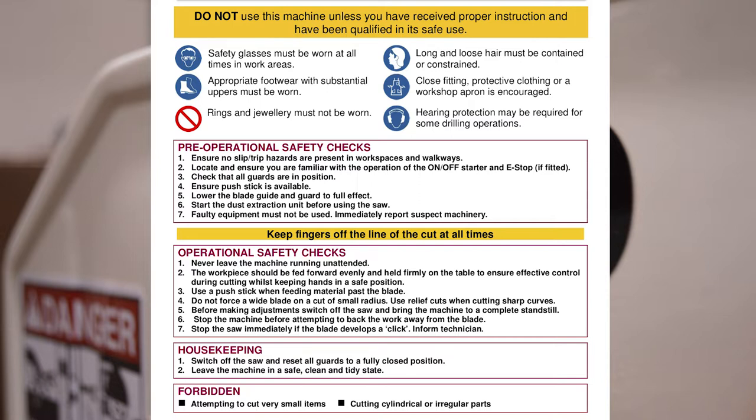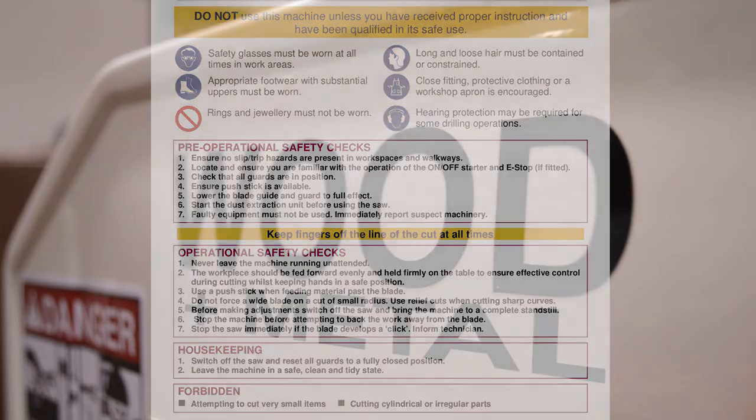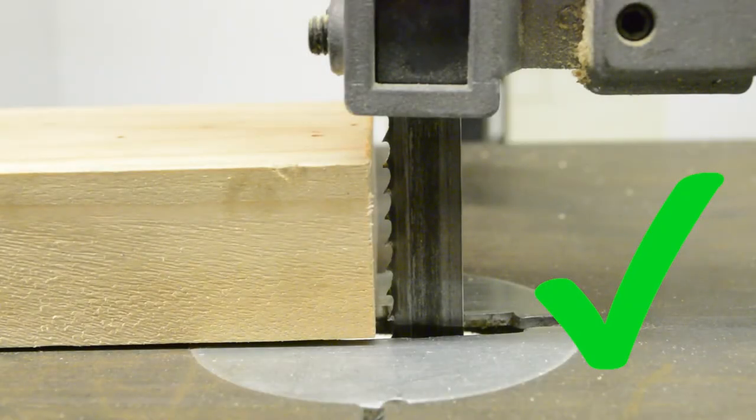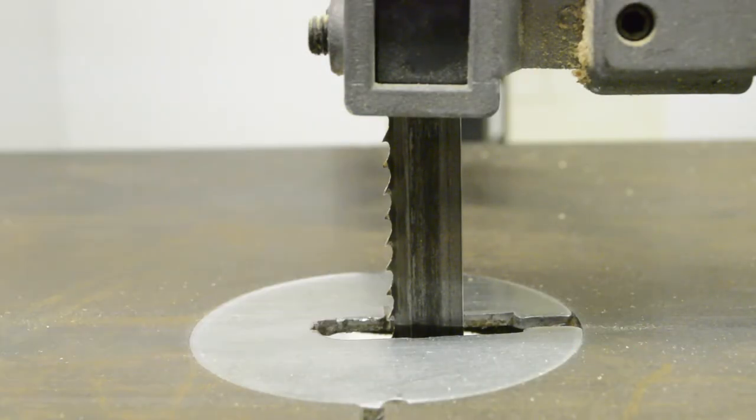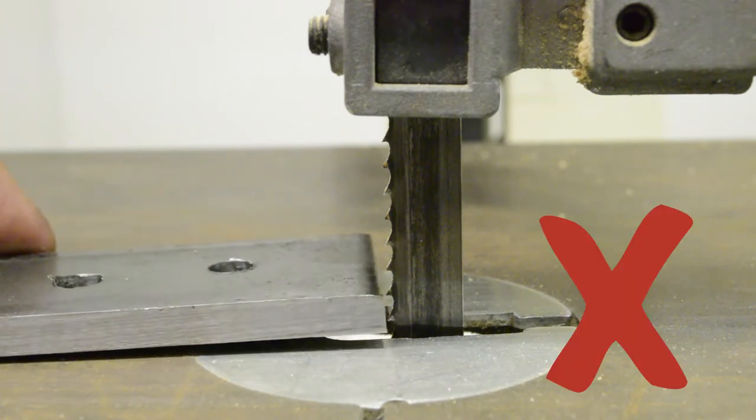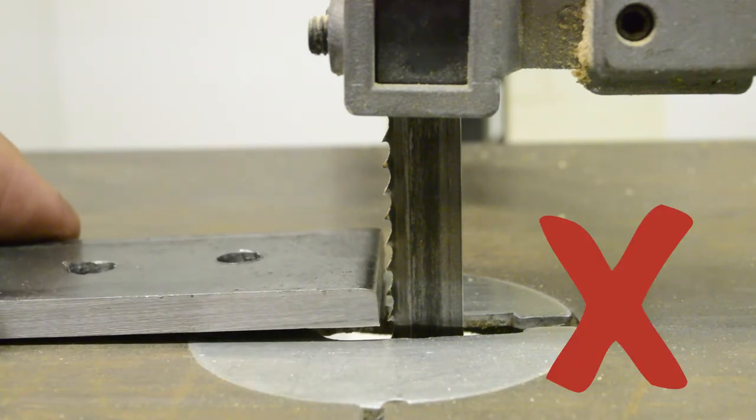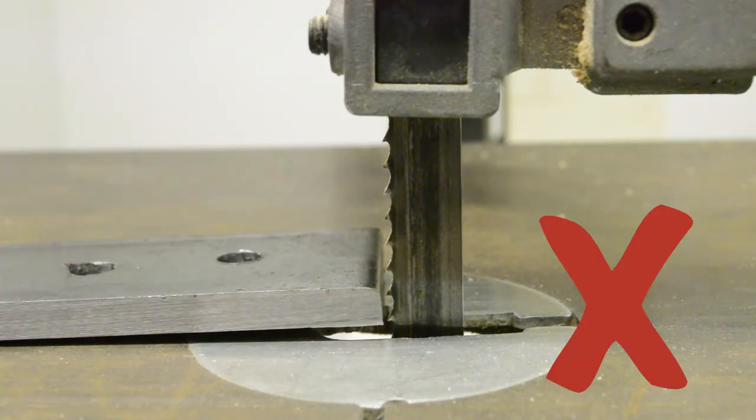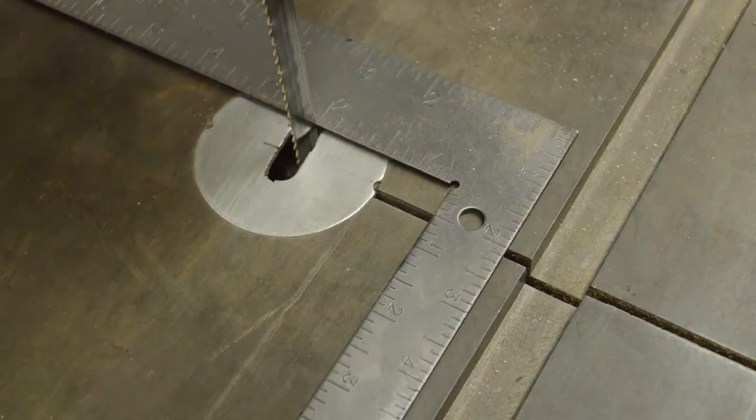The wood and metal bandsaws are operated the same, with the difference being in the blade type. In order to obtain a smooth cut, follow the three tooth rule, which states that a minimum of three teeth should always be engaged in the material. Any less will not only produce a rough cut but can damage or even break the blade and cause harm.